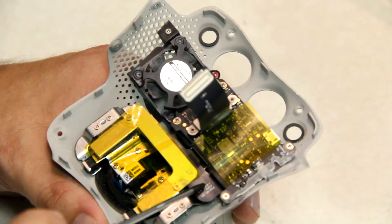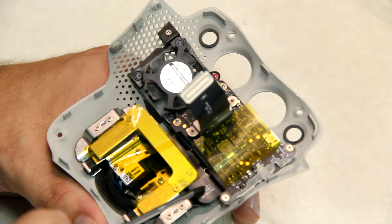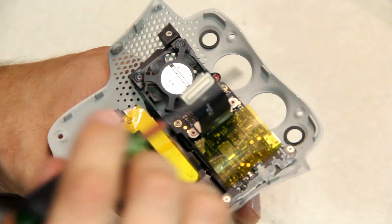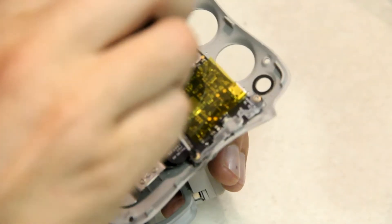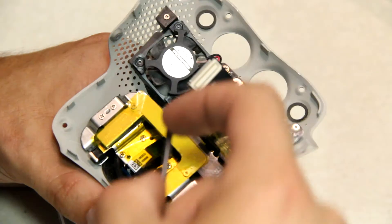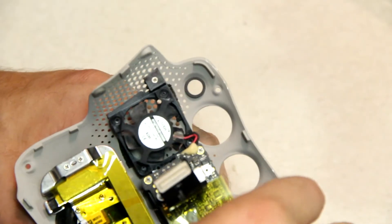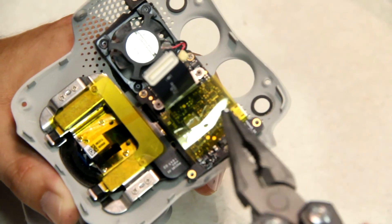Okay, so we have to get to this ribbon cable right here. This is what we're going to be replacing, so we have to remove all four of these screws. They are really small so you do want to be careful.